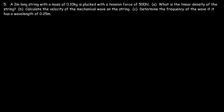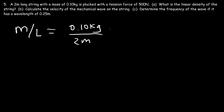Number 5. A 2 meter long string with a mass of 0.10 kilograms is plucked with a tension force of 500 newtons. What is the linear density of the string? The linear density is simply the mass per unit length. The mass is 0.10 kilograms and the string is 2 meters long. So 0.10 divided by 2 gives a linear density of 0.05 kilograms per meter.